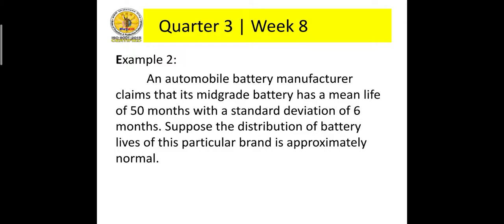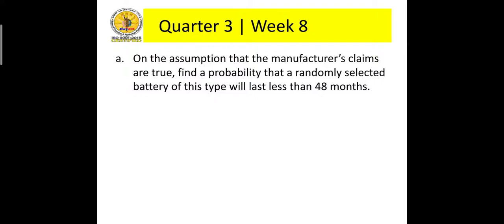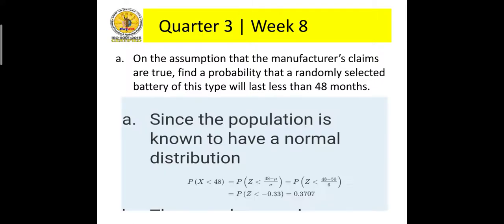Second example: an automobile battery manufacturer claims that its mid-grade battery has a mean life of 50 months with a standard deviation of 6 months. Suppose the distribution of battery lives of this particular brand is approximately normal. On the assumption that the manufacturer's claims are true, find the probability that a randomly selected battery of this type will last less than 48 months.